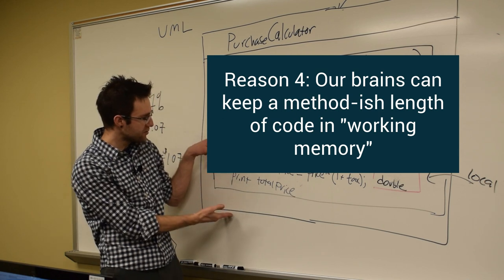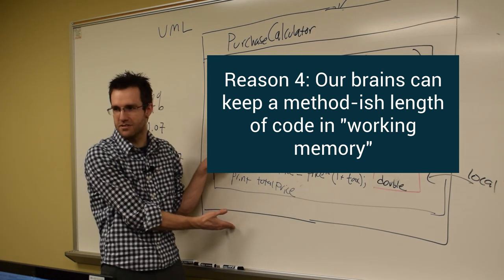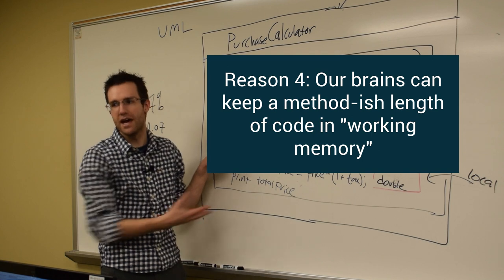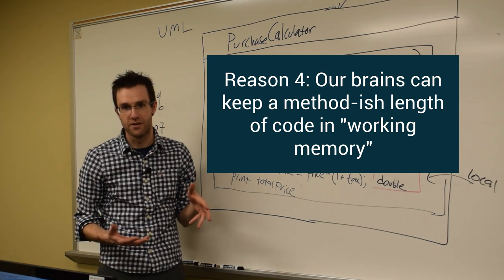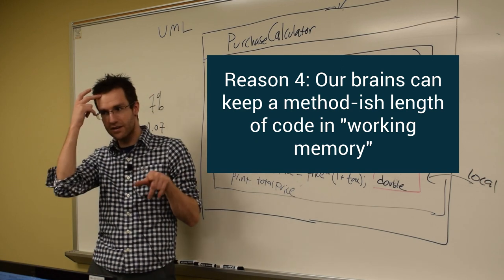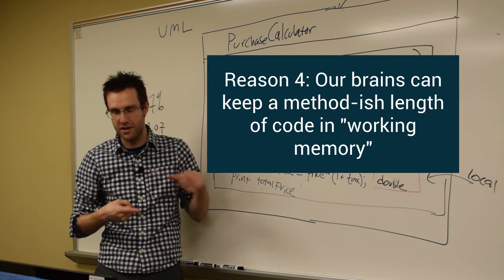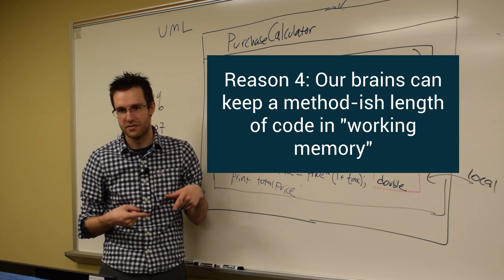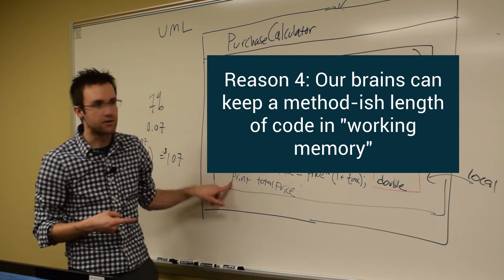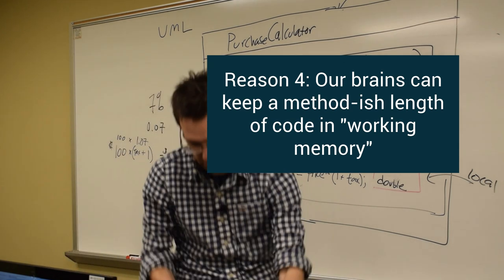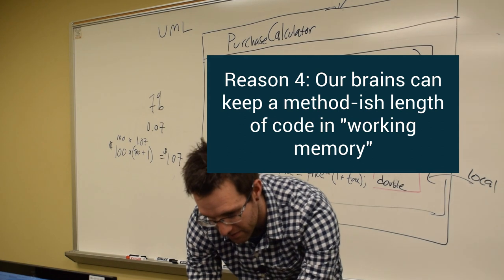So by writing code, doing a task that takes up to seven steps is a very manageable size of code. And not only is it manageable for my brain, but what if I need to calculate the sales price a couple of times? I'm not rewriting this code. I just have to call this method a second time in my code.